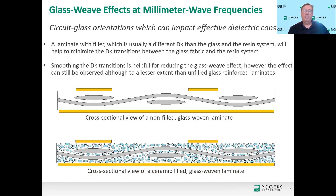Another factor to consider is filler. The top example is unfilled — just resin and glass. Below that is the same laminate type but with ceramic particles added. The ceramic has a different Dk than both the glass and the resin system: higher than the resin but lower than the glass. The ceramic particles act as an intermediary to smooth out the glass weave effect. For open weave glass in a highly ceramic-filled laminate, the ceramic filler almost eliminates the glass weave effect, as we'll see in the data.